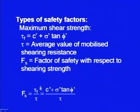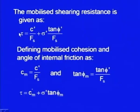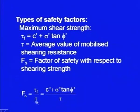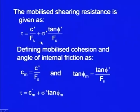The ratio of shear strength tau f to mobilized shear stress tau gives a margin of safety — this is defined as the factor of safety with respect to shearing strength. As the acting shear stress tau is less than tau f for a stable plane, we can rearrange the equation so that tau equals C dash upon F s plus sigma dash tan phi dash upon F s.